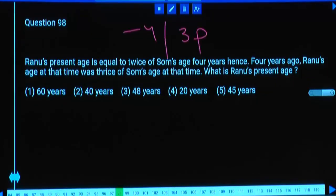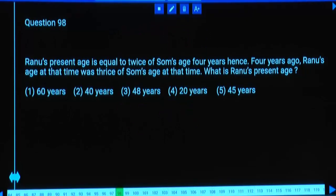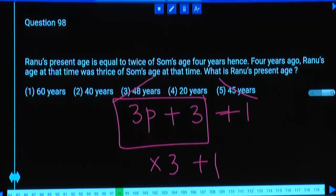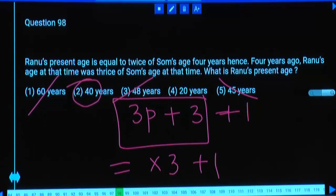3 parts should be a 3 multiple. To get present age, add 4 years. Can we write 4 as 3 + 1? So 3 parts + 3 is a 3 multiple, and Ramu's present age should be in the form 3 multiple + 1. The last option is odd — eliminated. Options that are perfect multiples of 3 are eliminated. Our answer should be 3 multiple + 1. 40 = 39 + 1, which is possible. 20 cannot be written as 3 multiple + 1. Right answer: 40.